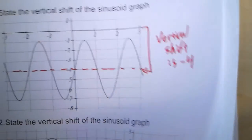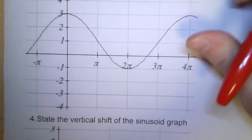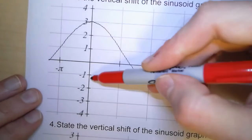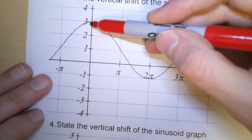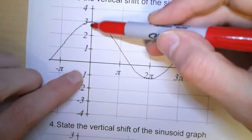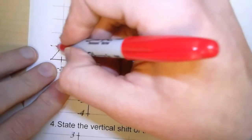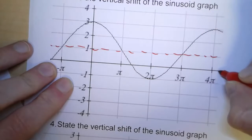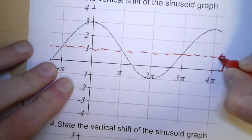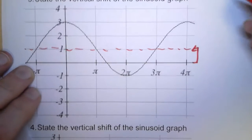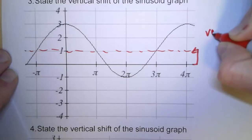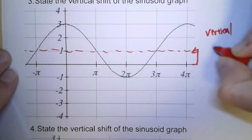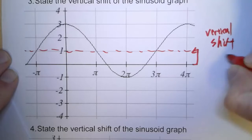So for the third one, here, our high point is 3 and our low point is negative 1. So what's the number that's halfway between them? It's 1. Right there. So normally, this graph would be on the x-axis, but it got moved over to there. So our vertical shift is 1.